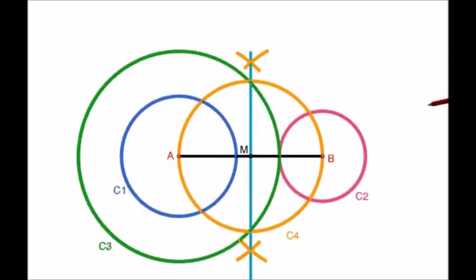Now carefully identify the points where circle C3 and C4 intersect. Name them as P and Q respectively.